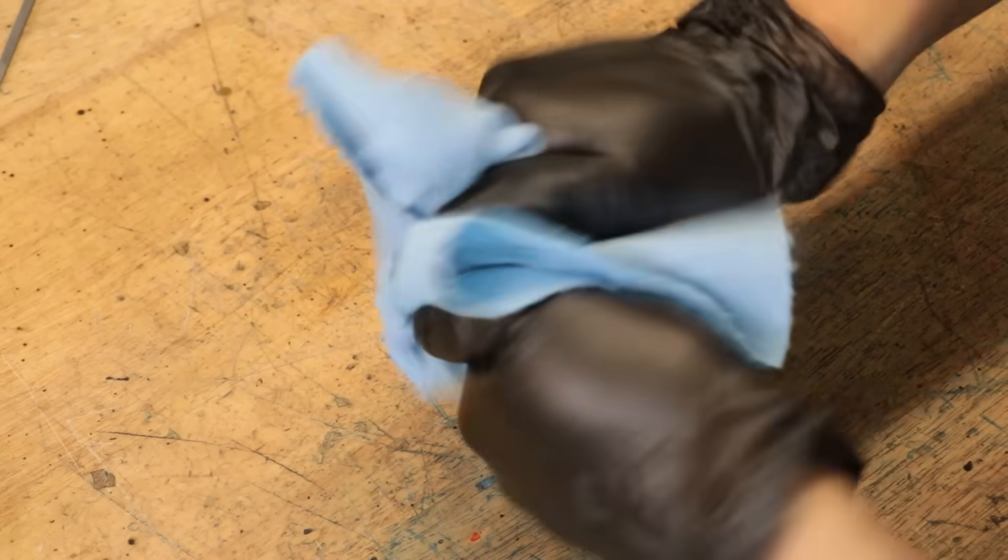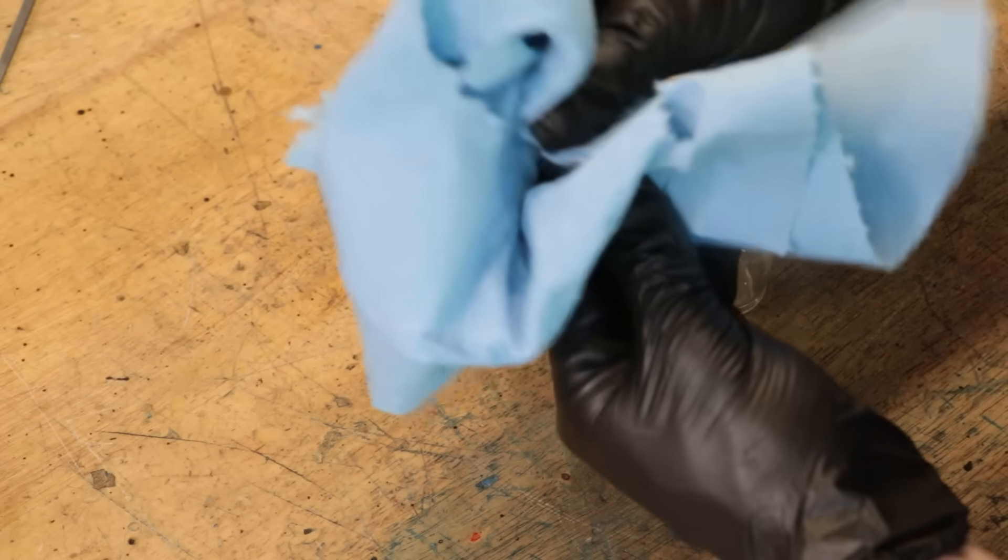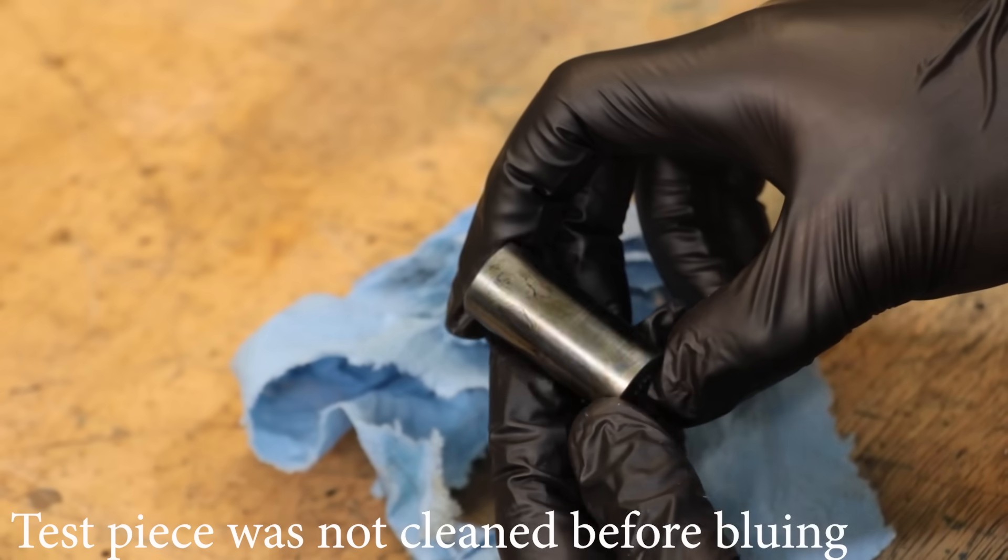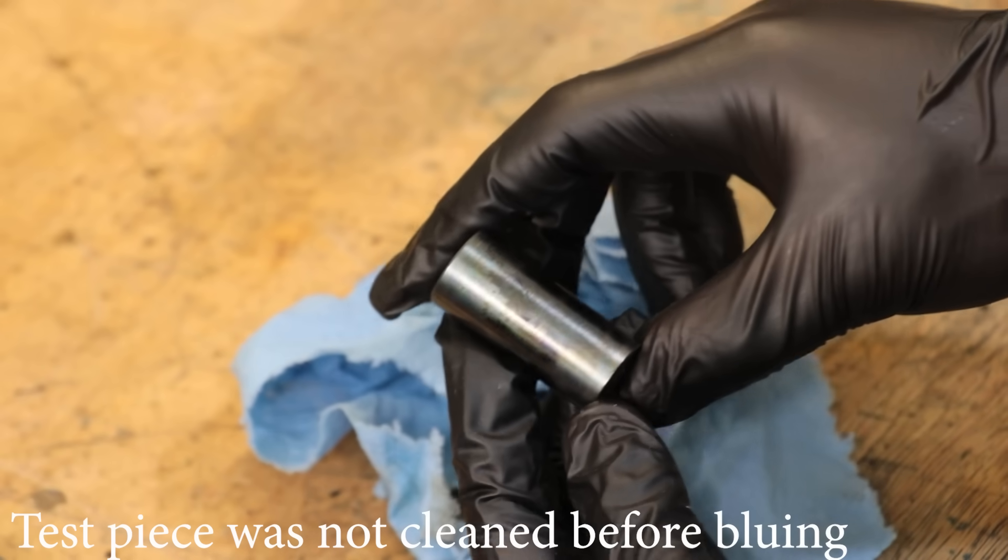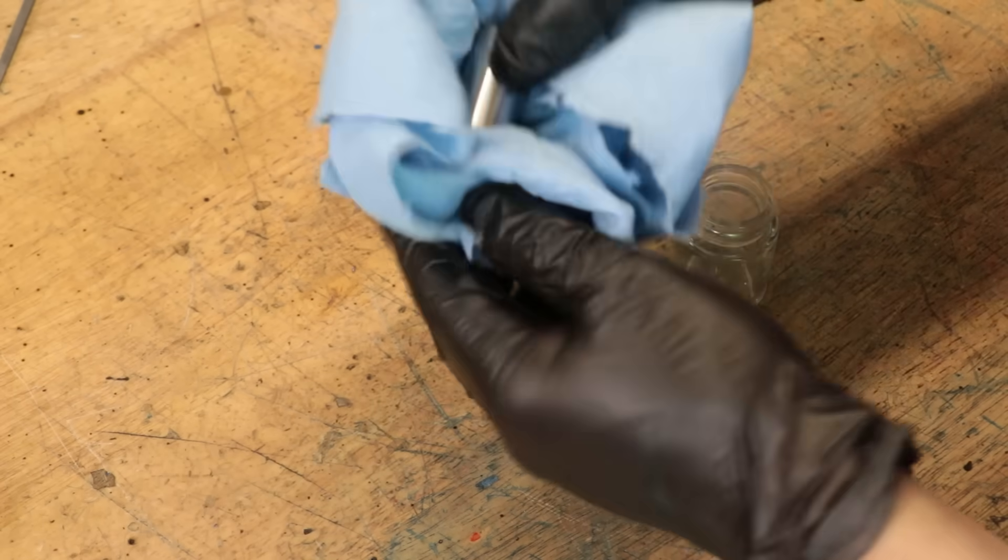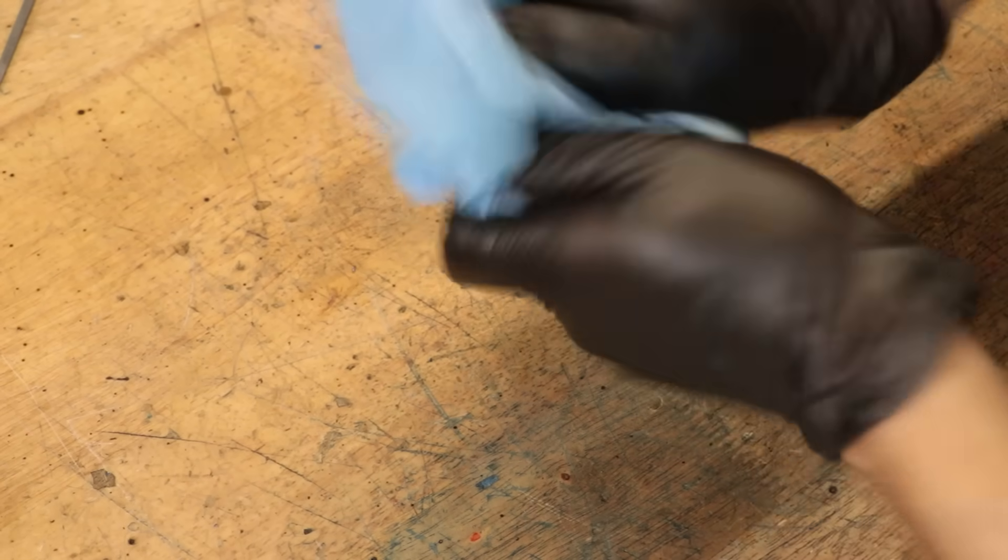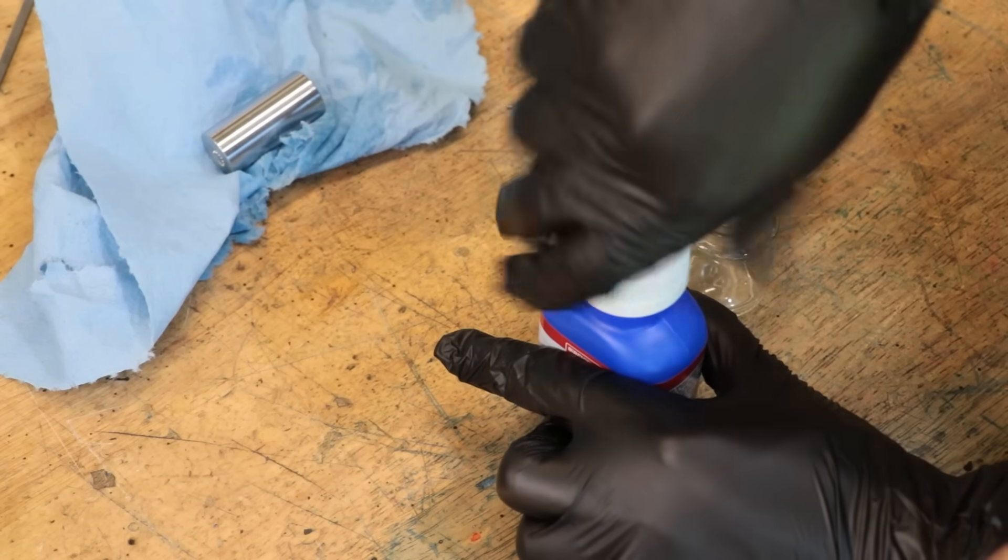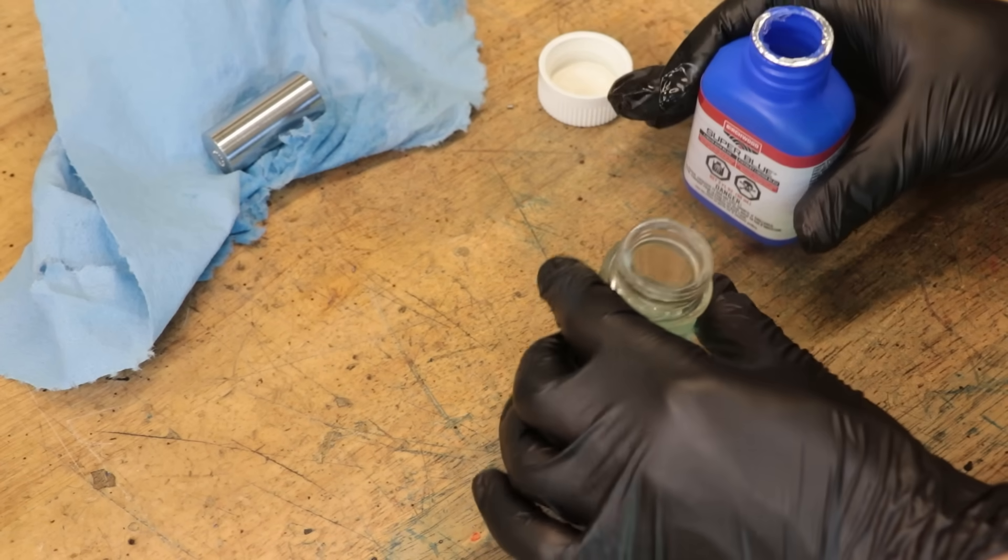The first thing we need to do is clean the part to remove any grease or oil. The cold blue needs a very clean surface to get a uniform finish. Any oil is going to show up as a discolored splotch and it's going to be very noticeable. My normal go-to is acetone to clean it, and that usually does a pretty good job.